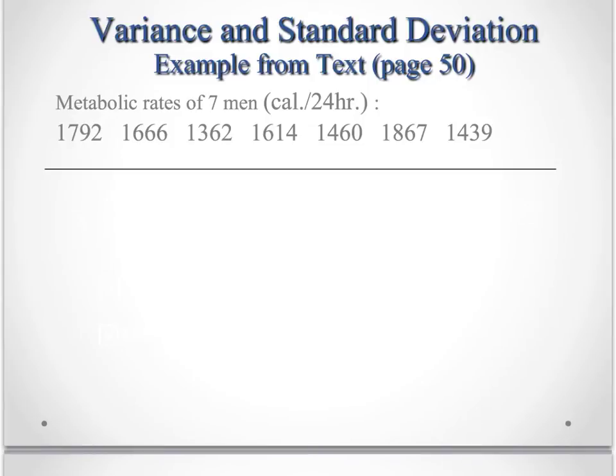So let's look at an example. This one's in your textbook on page 50. And it looks at the metabolic rates of seven men. The number of calories, or kilocalories actually, they burn in a 24 hour period.